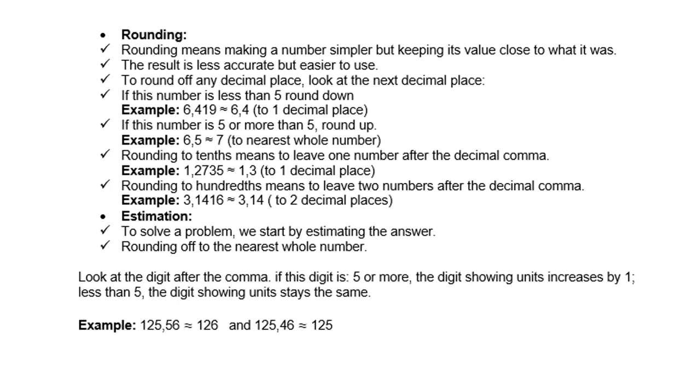Example, 125,56 is the equivalent of 126 because the comma 5 rounds up. And 125,46 is 125 because the comma 4 is smaller than 5, so you round down.